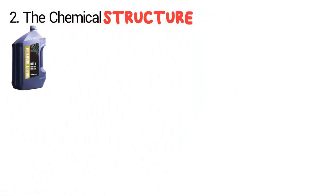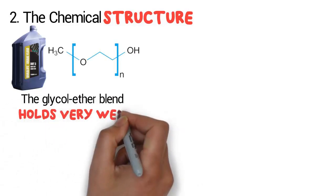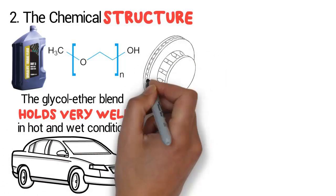Number two: the chemical structure. DOT 3 has a blend of ether and polyalkylene glycol. The glycol ether blends hold very well in hot and wet conditions, which is perfect for regular vehicles where the brakes get heated up easily.